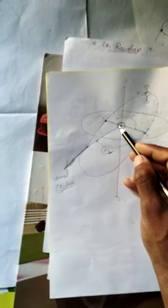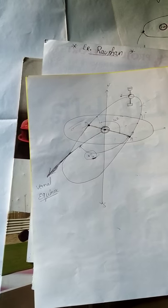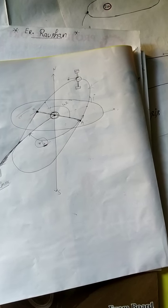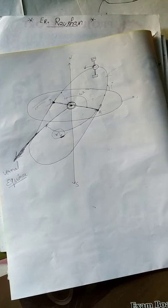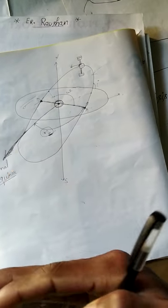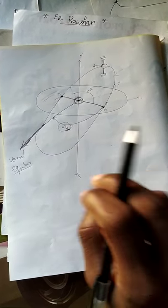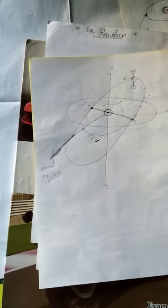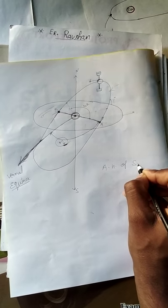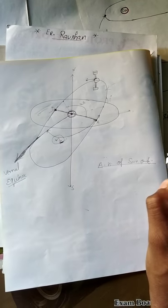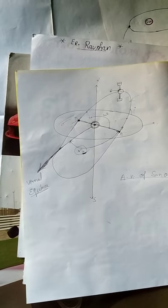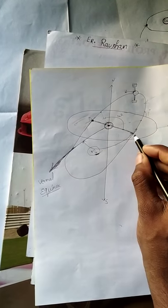The longitude of ascending node is measured from the vernal equinox to the ascending node. What is the vernal equinox? Generally you read in classes that it is a place in the sky where the sun rises on the first day of spring. But the real definition is: the vernal equinox is the ascending node of the sun's orbit.